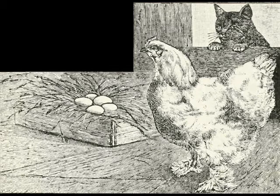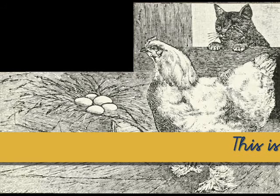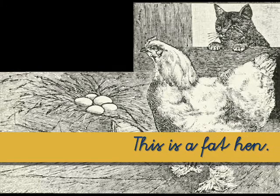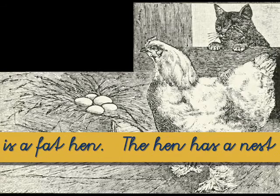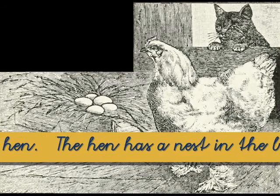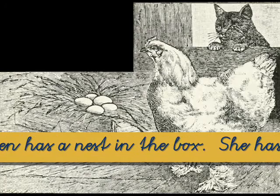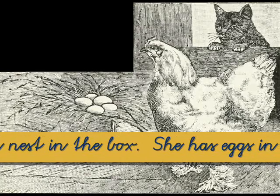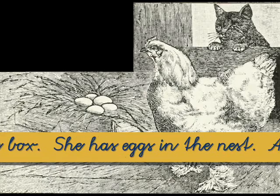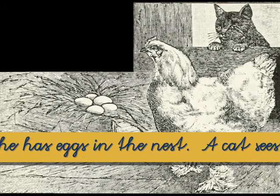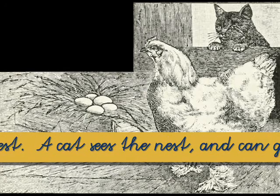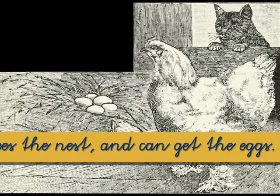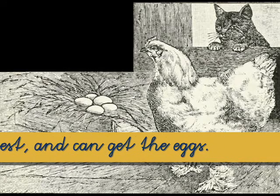Let's read this lesson one more time. This is a fat hen. A cat sees the nest and can get the eggs.